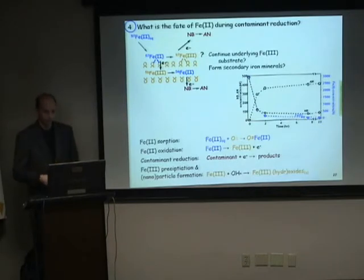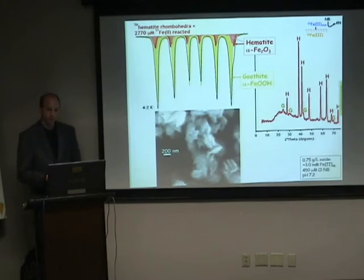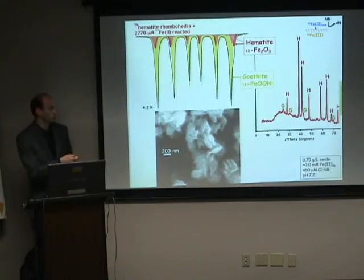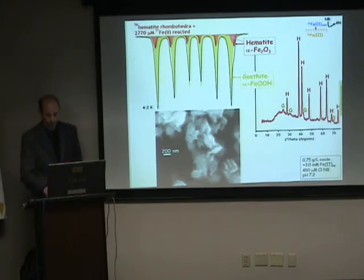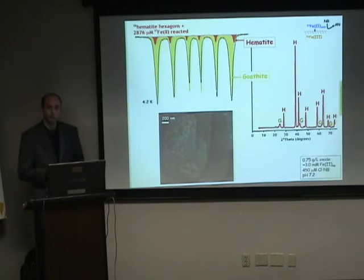We conducted experiments with contaminants, Fe2+, and hematite using three different kinds of hematite substrates — three different morphologies: rhombohedra, hexagonal plates, and needles — to vary the available surface area and the number of reactive surface sites. We exposed them to aqueous 57Fe2+ and our contaminant. The Mössbauer spectra showed formation of two phases: hematite in two sextets and a large signal from goethite. We confirmed these species with X-ray diffraction and observed a change in surfaces from smooth rhombohedra to something more fuzzy. On 56 hematite hexagons, we saw goethite formation as well as additional hematite, with surfaces roughened by needle-like particles indicative of goethite.